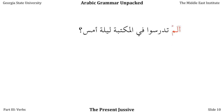If we want to ask a negative question, we can say: أَلَم تدرسوا في المكتبة ليلة أمس؟ — 'Didn't you all study in the library last night?' When we combine لم with the question particle هل, it becomes أَلَم. Be careful because the characters أَلَم can also mean 'pain,' so watch out for that distinction.